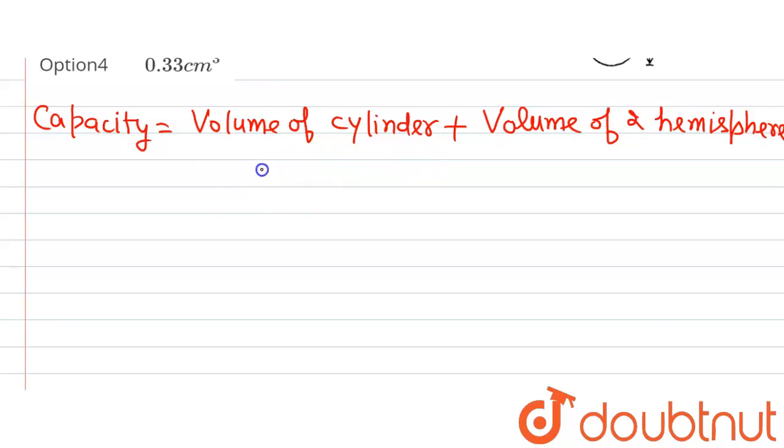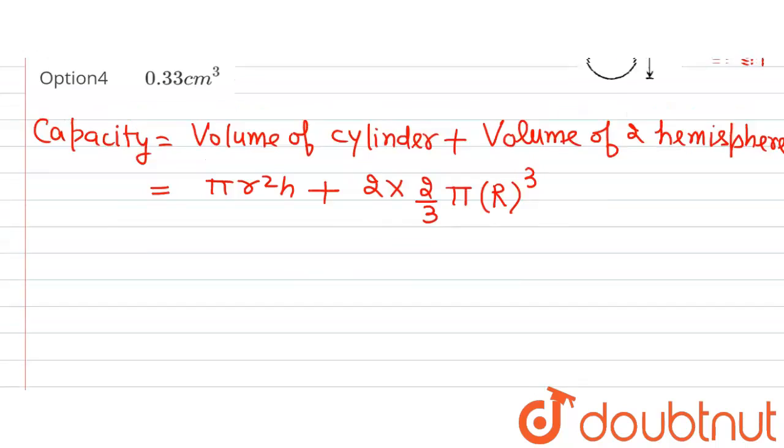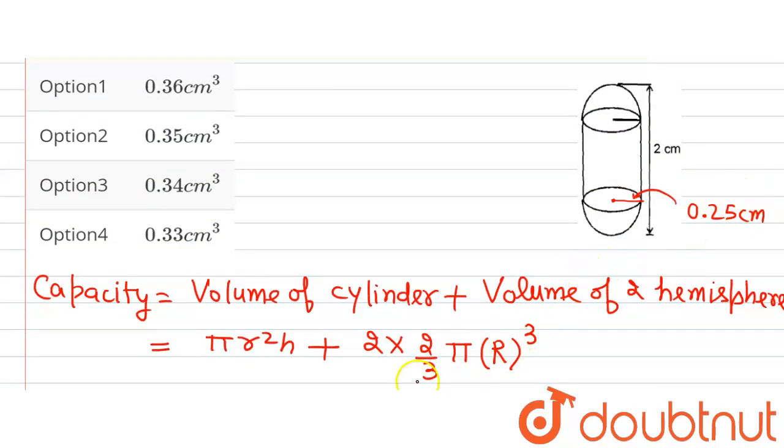Now solving it, we will get capacity is equal to volume of cylinder which is πr²h plus volume of two hemispheres which is 2 × (2/3)πR³. Let us denote the radius of the hemisphere by capital R raised to the power 3. Now the radius of the cylindrical part and the radius of the hemispherical part is same.